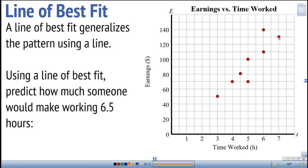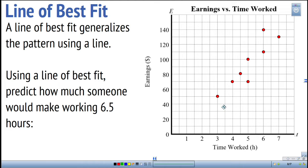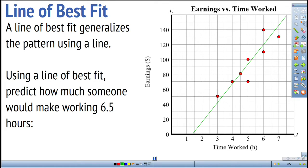We can generalize the pattern using a straight line called the line of best fit. I'm going to follow this pattern and draw a straight line through this cloud of dots, following the trend. There should be roughly the same number of dots above and below the line. This is a manual one made by hand, but computer programs use an algorithm to make a line of best fit as well.